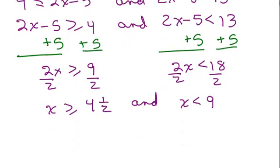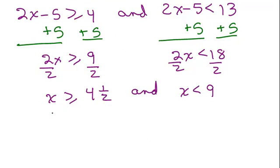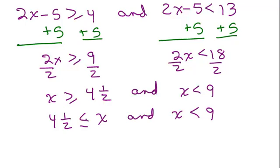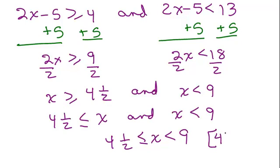Now, how would I write that more compactly? Well, x is greater than or equal to 4 and a half means 4 and a half is less than or equal to x, and x is less than 9. Notice we have the less than symbols going the same direction both ways. So this is: 4 and a half is less than or equal to x is less than 9. In interval notation, that would be [4½, 9).